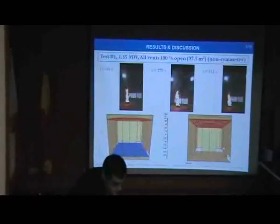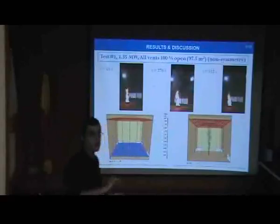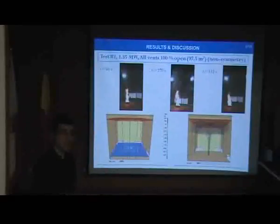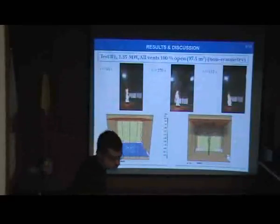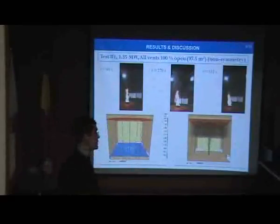Below, we have the velocity contours at a plane at half of the vent's height on the left and the density prediction on the right.